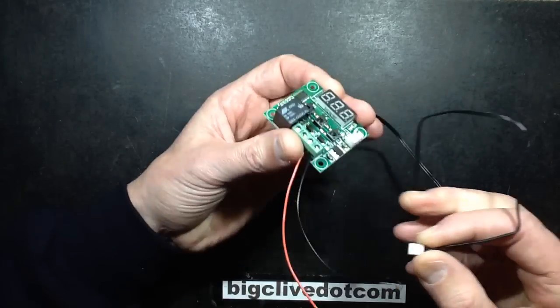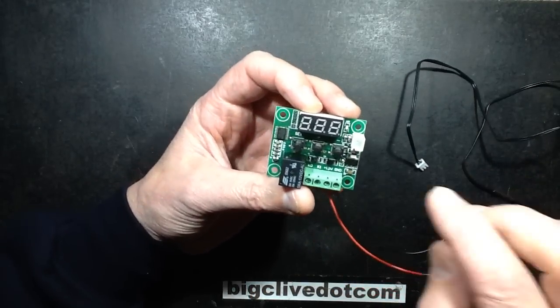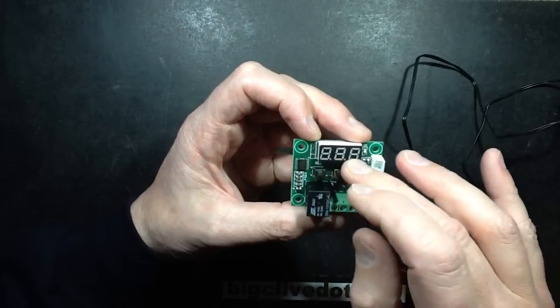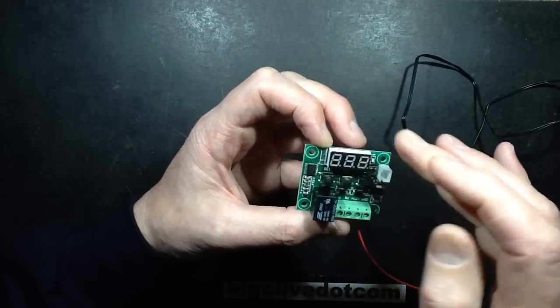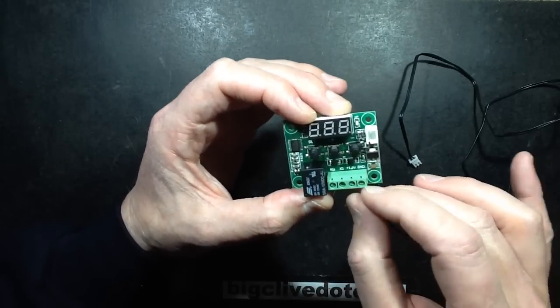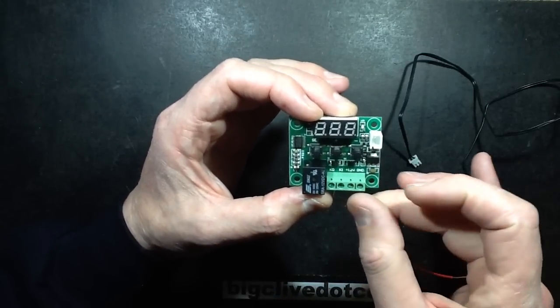The thermistor probe, it's not a thermocouple, it is actually a resistive thermistor. It plugs in here. It's got the digital readout for setting the parameters and showing the actual temperature, a relay and the output. It's got the two input connections labeled plus 12 volt and ground.